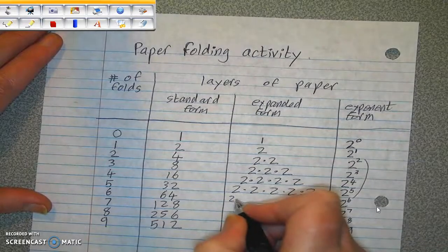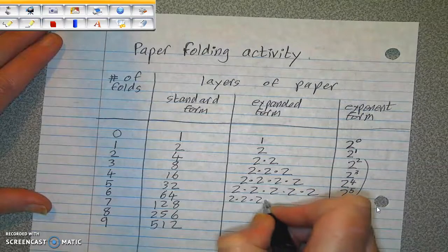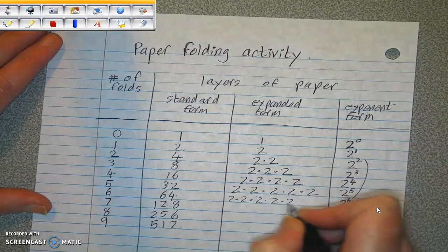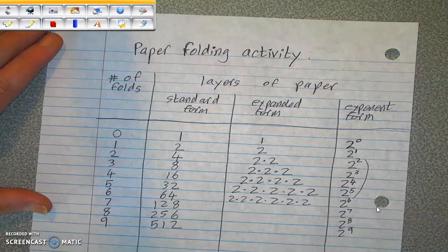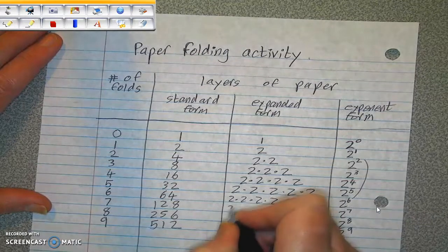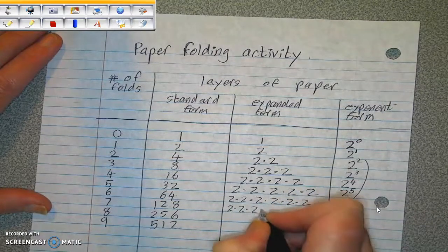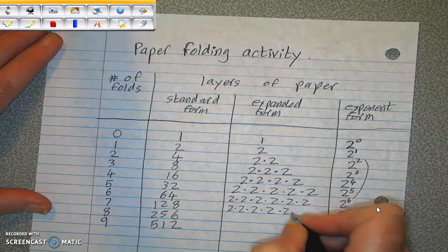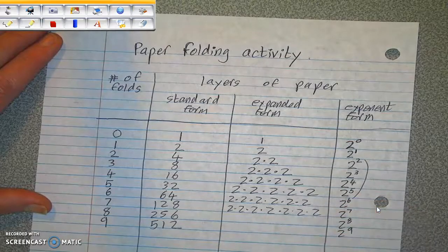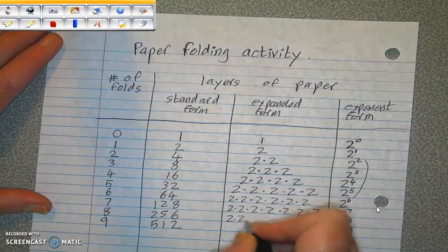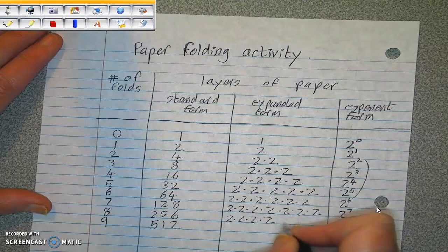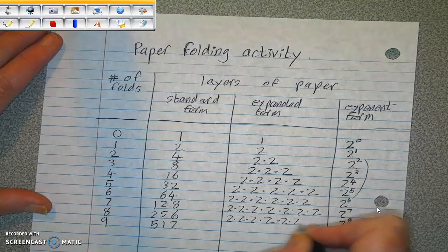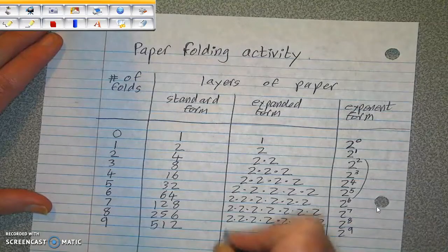And in here, I'd like you to fill out how many times you're multiplying by 2. That's 6 factors of 2. This is 7 factors of 2. This is 8. And this is 9.